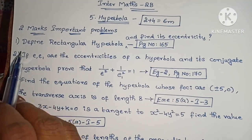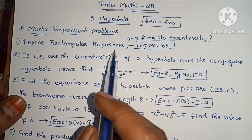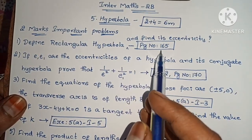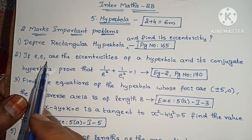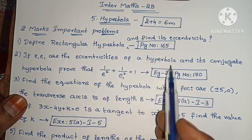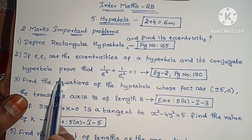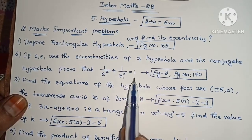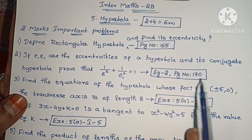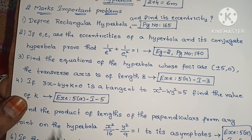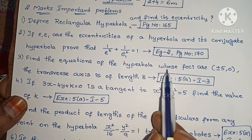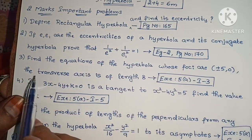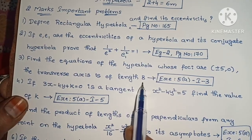First one: Define rectangular hyperbola and find its eccentricity. Page number 165. Next, if e and e1 are the eccentricities of a hyperbola and its conjugate hyperbola, prove that 1/e² + 1/e₁² = 1. Example 2, page number 170. Next, find the equations of the hyperbola whose foci are (±5, 0) and the transverse axis is of length 8.